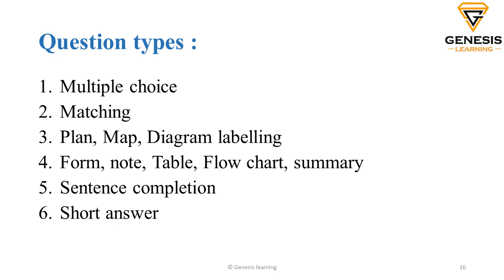Now there are different question types for your listening. There is multiple choice, where you've got a question and multiple answers and you choose one. Then you've got matching, where you have to match certain information. You've got map labeling, where a map will be there and you have to label where something is. Then you've got a table where you have to fill up certain things. Then you've got sentence completion where you fill in certain gaps, or a short answer with a question and a one-word answer. So these are the six different types of questions you can get for your listening.